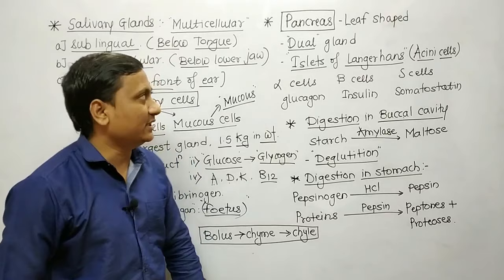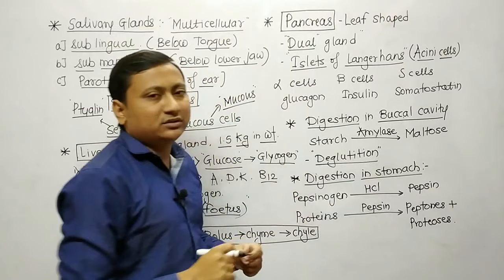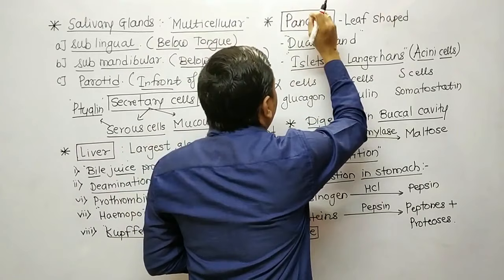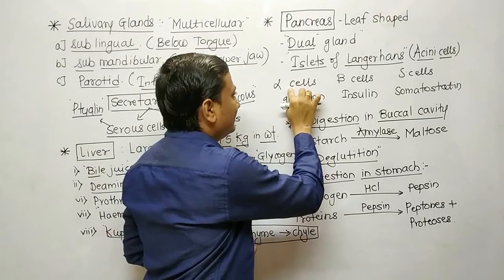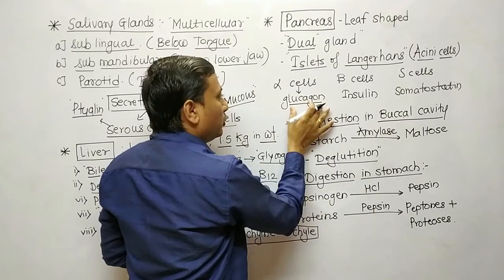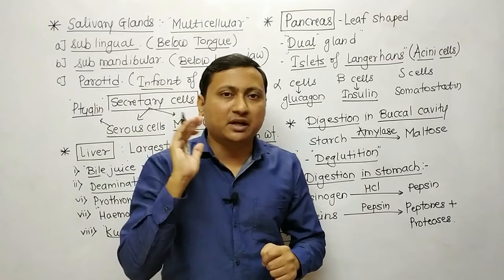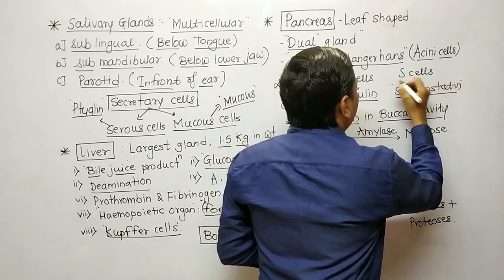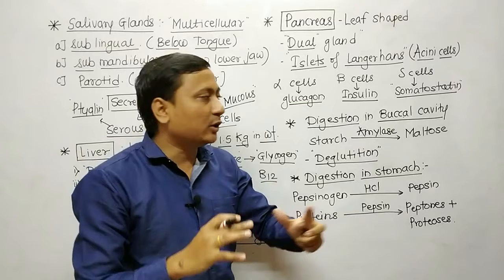The next digestive gland is the pancreas. Pancreas is a leaf-shaped gland and dual in nature because it performs both endocrine and exocrine functions. The endocrine part consists of acinar cells forming structures known as islets of Langerhans. These consist of three cell types: alpha cells produce glucagon, which increases blood glucose level; beta cells produce insulin, which decreases blood glucose level; and delta cells produce somatostatin, which inhibits secretion of both glucagon and insulin.